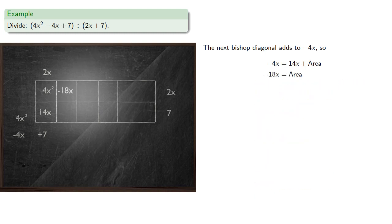And the area of this rectangle, well that's the product of width and height, so we can find its width, which will be negative 9.